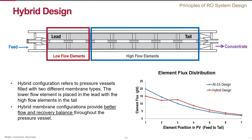The last topic in this section is the hybrid design. The hybrid configuration combines two different membrane models within the same pressure vessel: lower-flow membranes placed in the front of the vessel, and higher-flow elements in the tail. The graph at the bottom shows the flux distribution along the pressure vessel for conventional versus hybrid designs. The lead element experiences the highest flux and the highest risk of fouling. Hybrid design eliminates this disproportionation and allows for better flow and recovery balance within the vessel. Additionally, if the hybrid design does not compromise product quality, feed pressure and therefore energy consumption are lower.